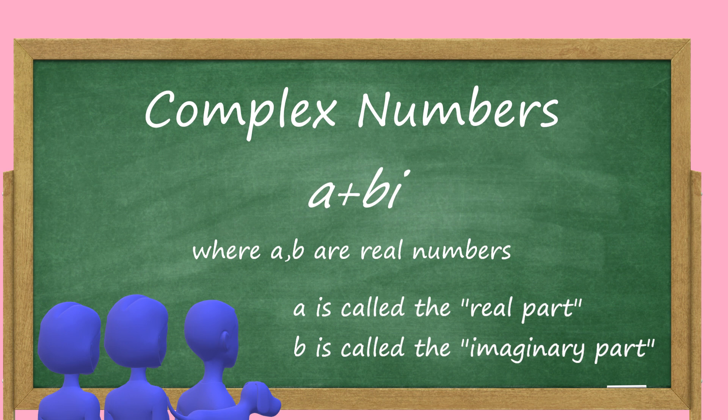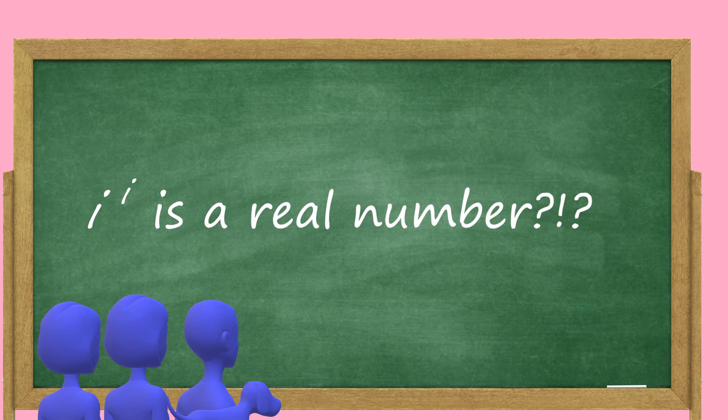But while i is completely imaginary, i to the power of i is a real number. Specifically, i to the i is equal to e to the negative pi halves.